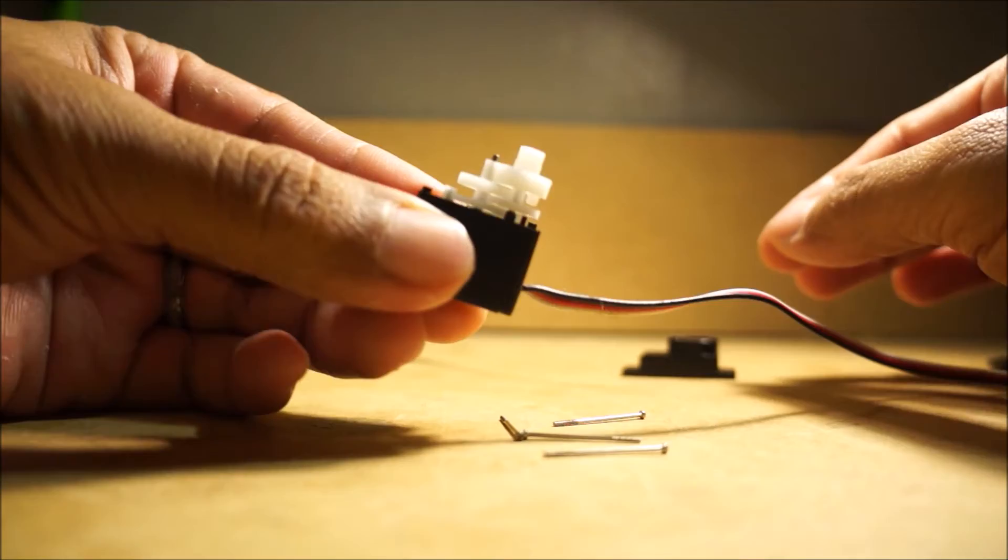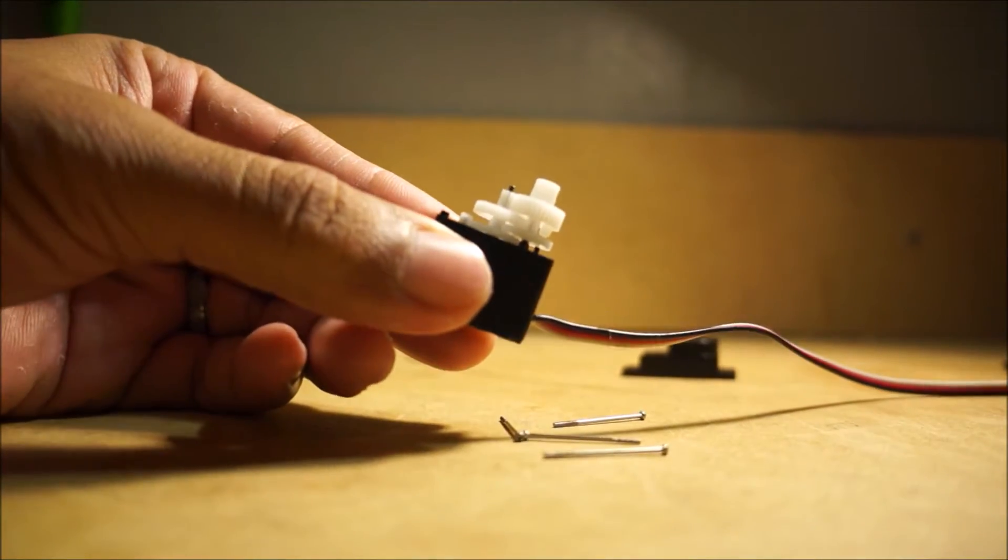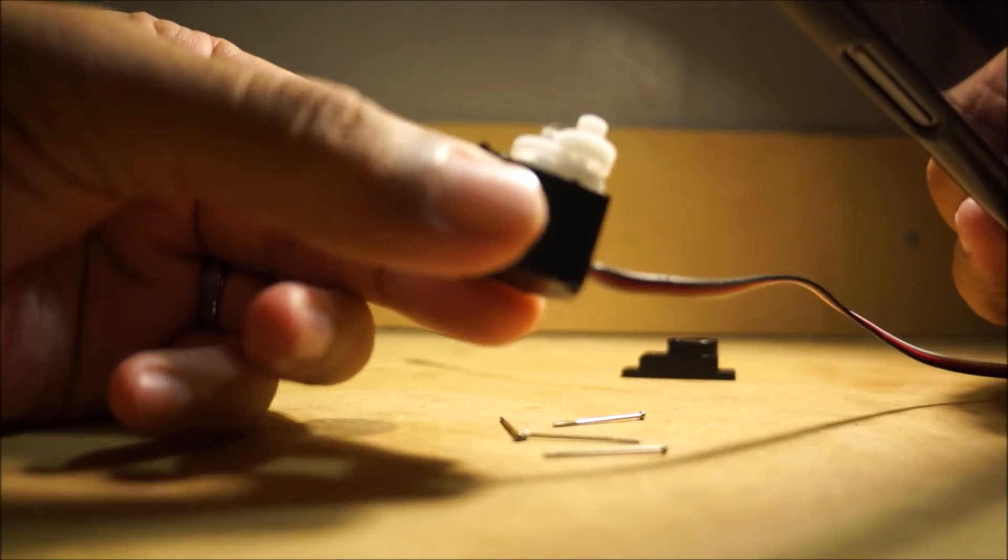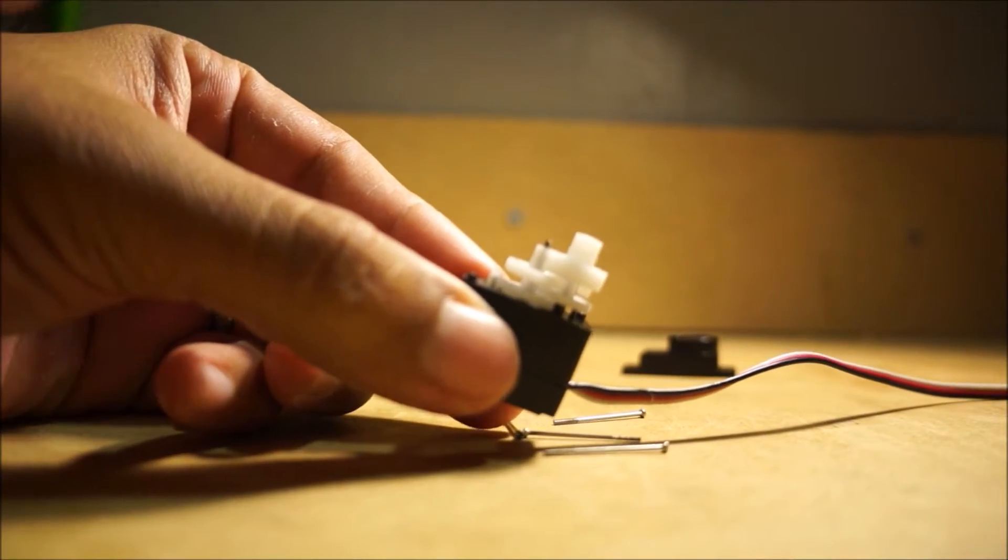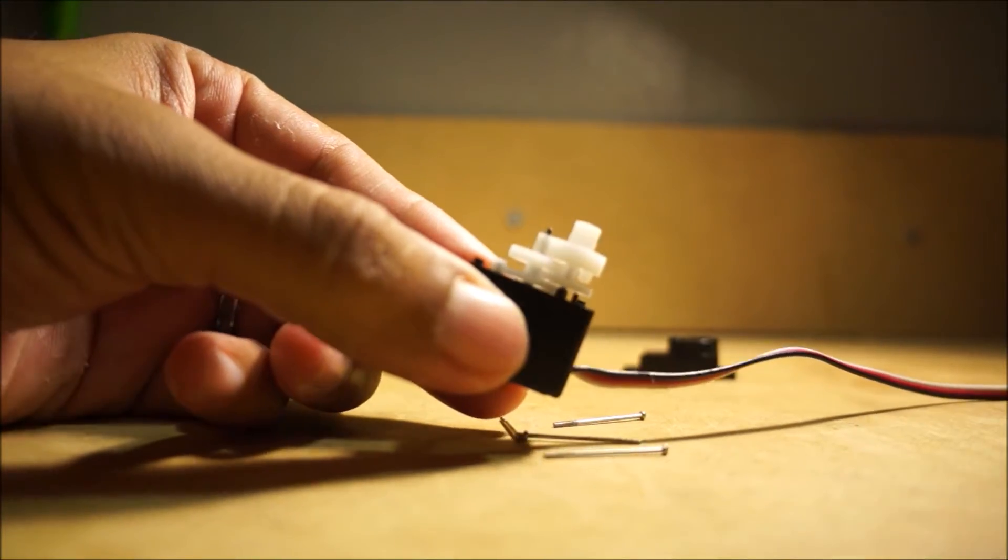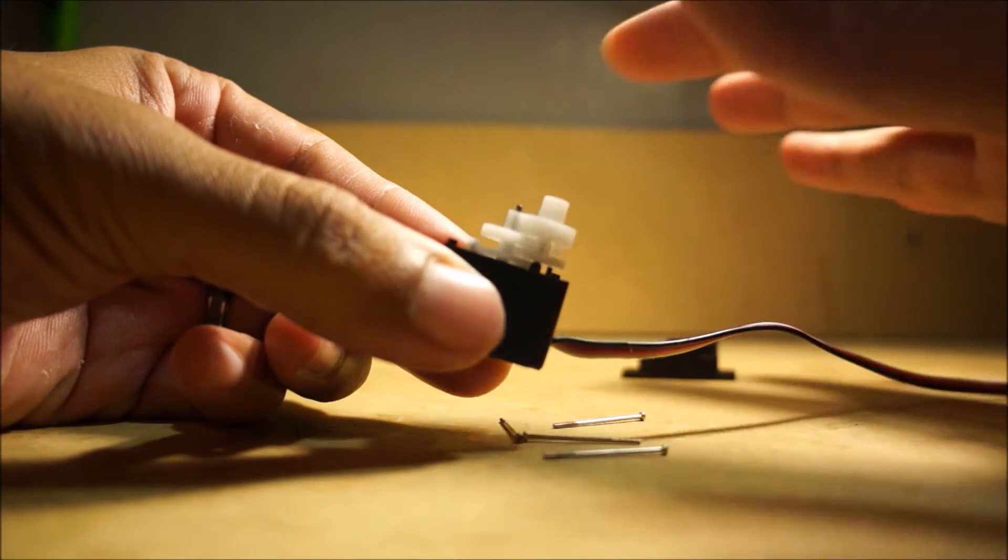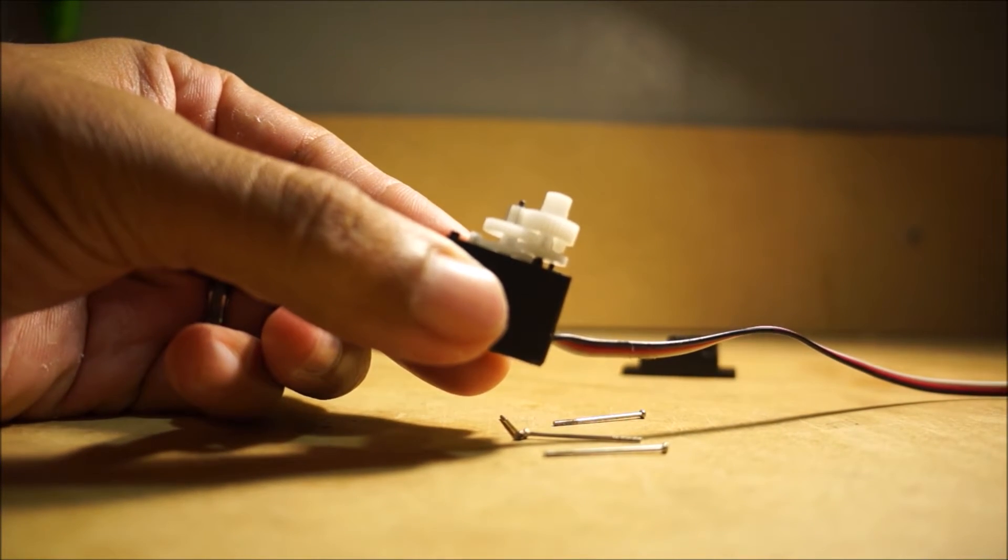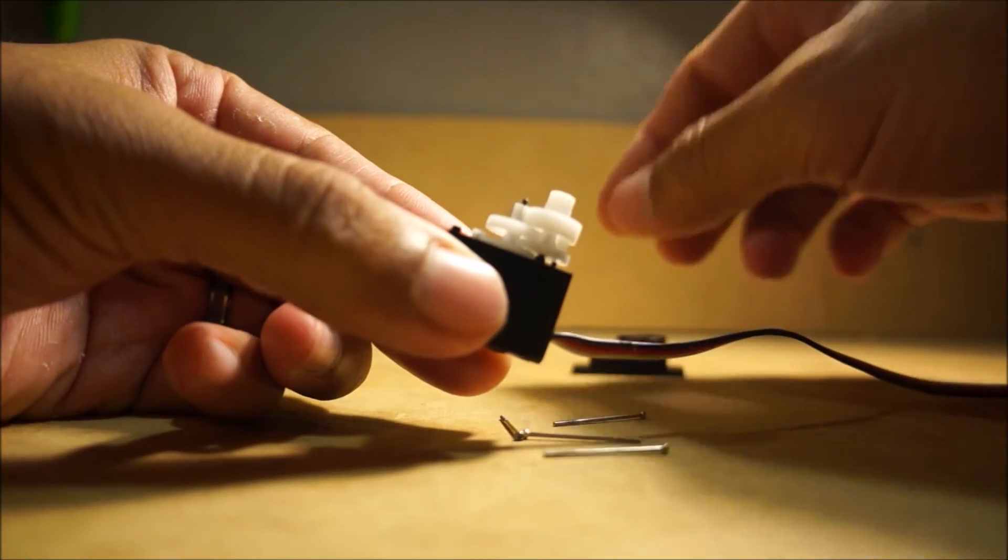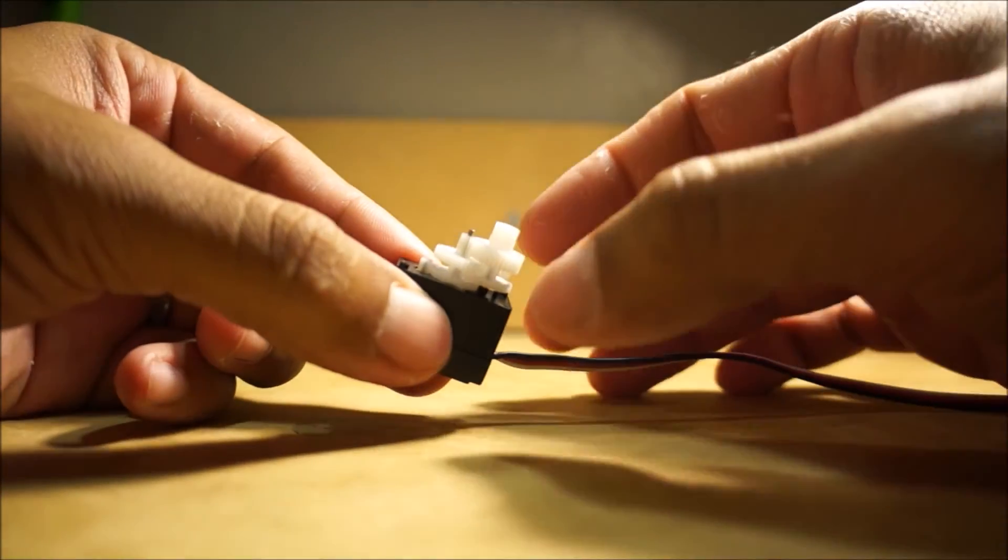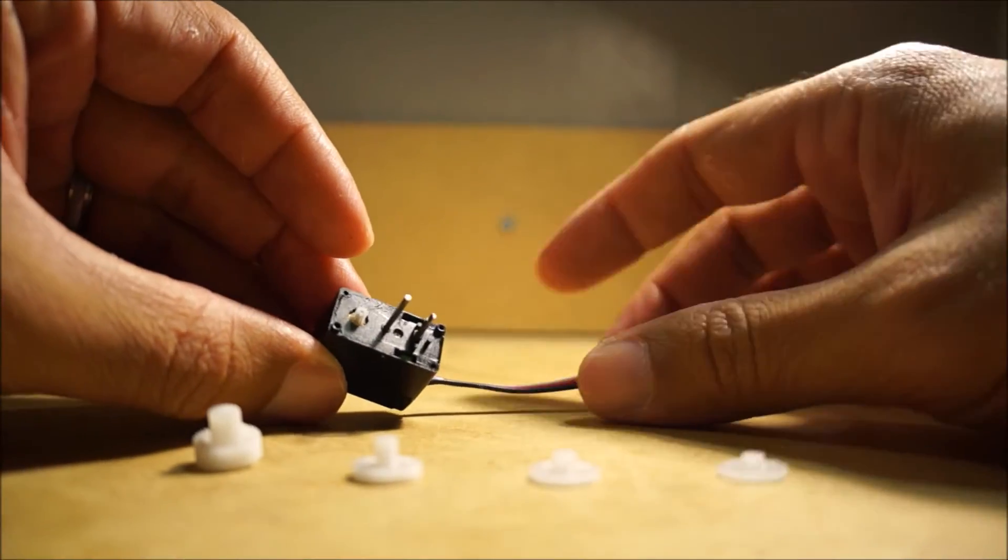When you're taking the top part out, just be very careful you don't pop those gears off. What you're gonna want to do is take a picture of those gears that way you know in what order they go back in. That's very important, take a picture of the gears that way you know exactly the way they go back in once you're done with this whole process. Once you've taken the pictures you can go ahead and put some of these pieces to the side that way it's not in the way. Start taking the gears out.